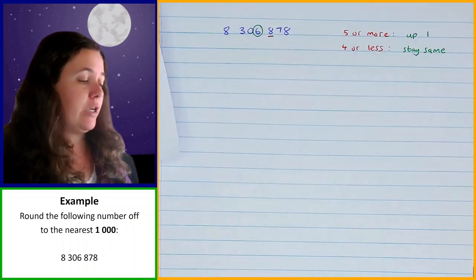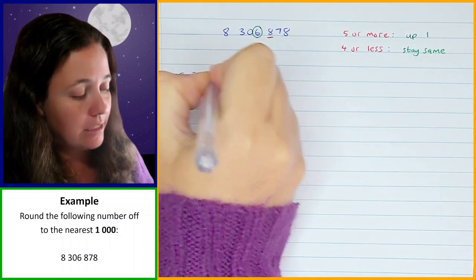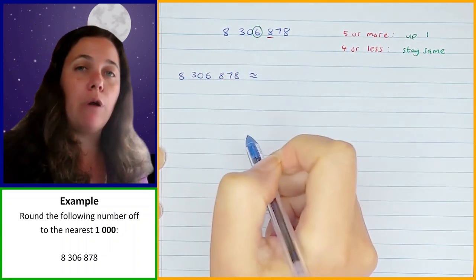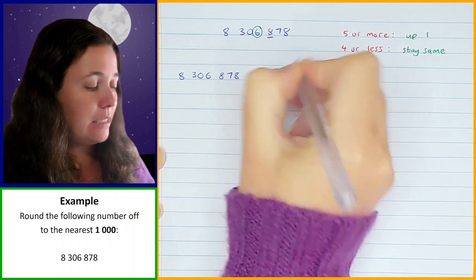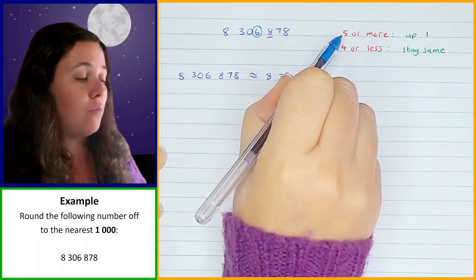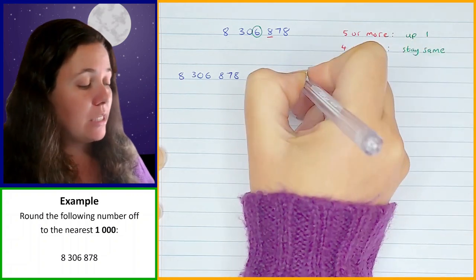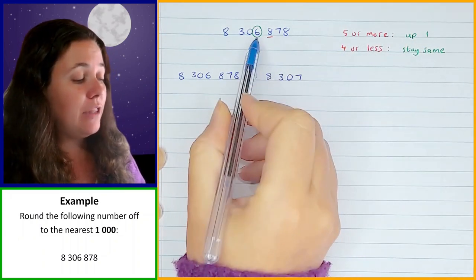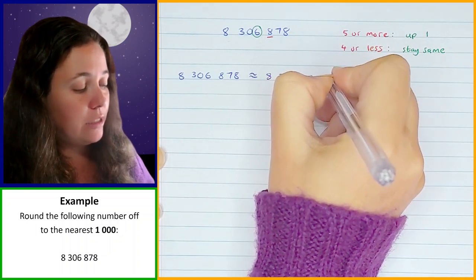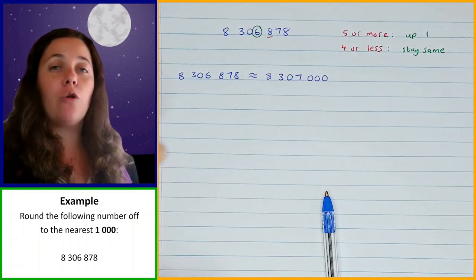So now we write: 8,306,878 is approximately equal to 8,307,000. The 6 changes to 7 because the 8 is in the 5 or more category, so it goes up 1 to become 7. Then everything after that changes to zeros — so that's 0, 0, 0. That's the process we follow when rounding off.